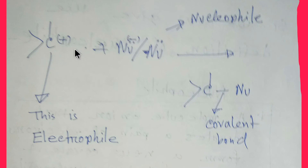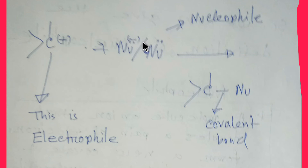Let's repeat the previous example. Look here — this is the nucleophile, which loves the nucleus. And this is the electrophile. Electrophile means electron-loving, so this is an electron-loving molecule or species, and this is a nucleus-loving species. A new covalent bond will be formed between them.